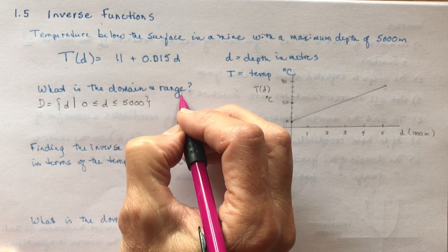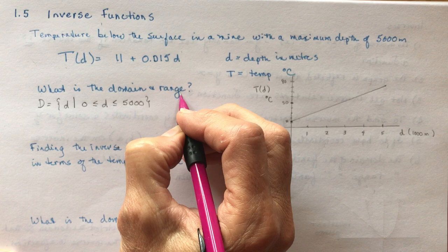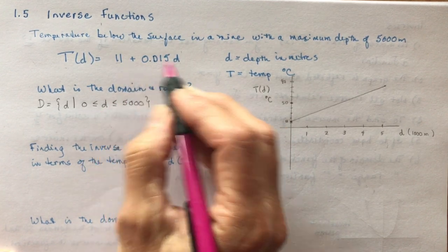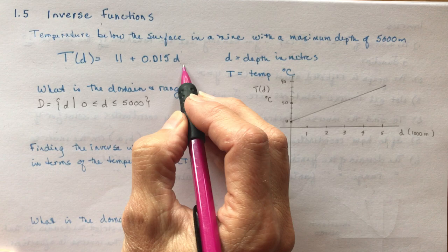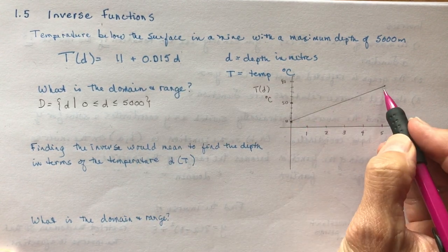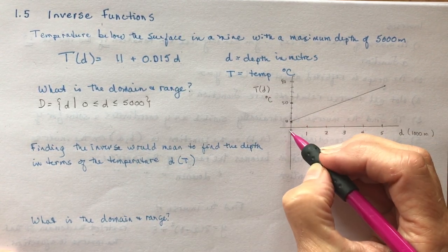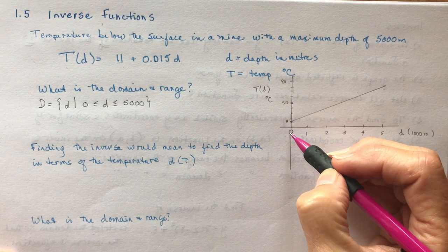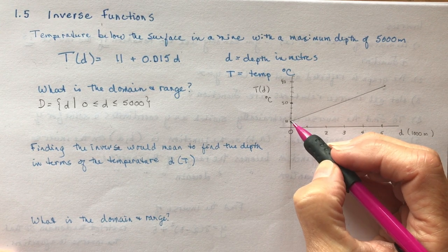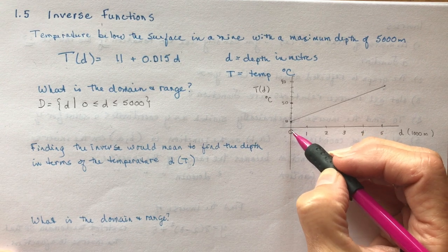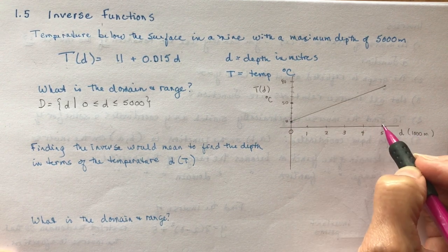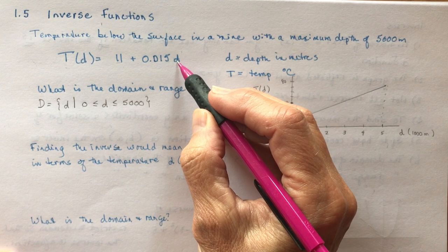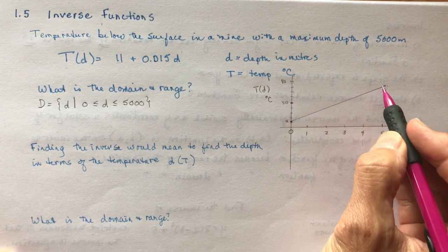If you're asked to find the range, then that means you're going to need to plug in the values between 0 and 5,000 to find out where it starts and where it would end. I drew a little graph for you over here. When depth is 0, the temperature is 11 degrees Celsius. We go from 11 up to—I plugged in 5,000 into this equation for d and ended up with a value of 86.